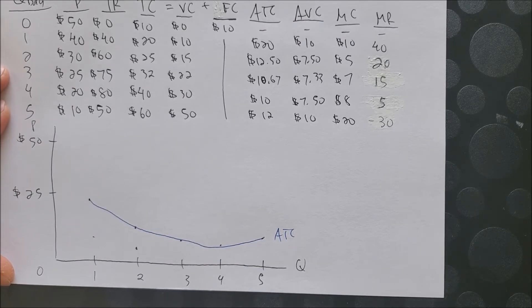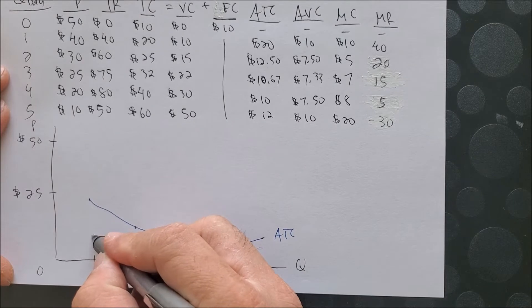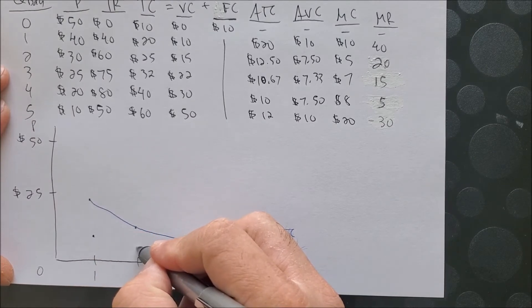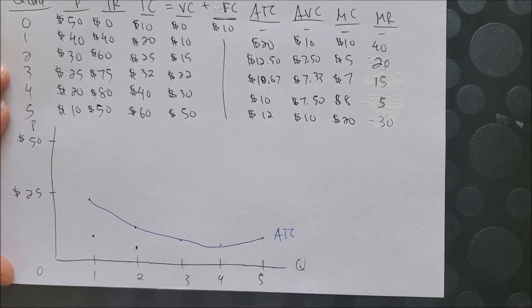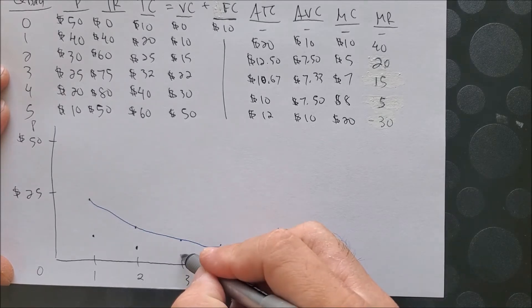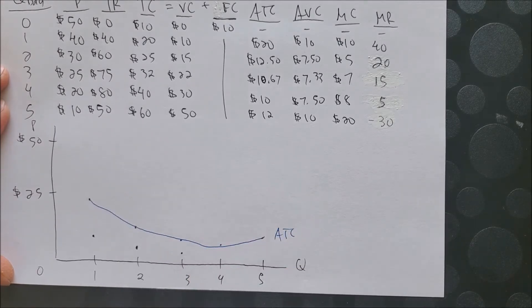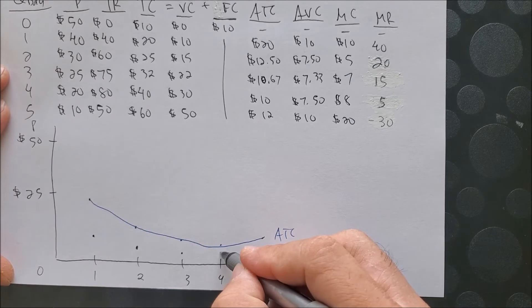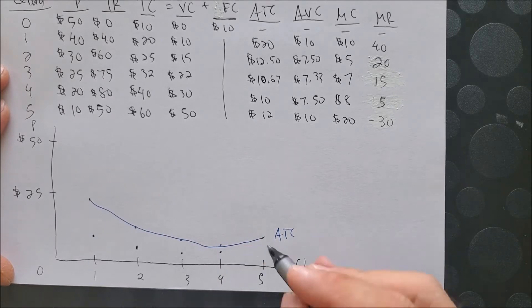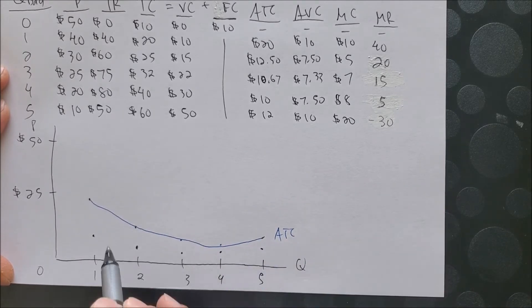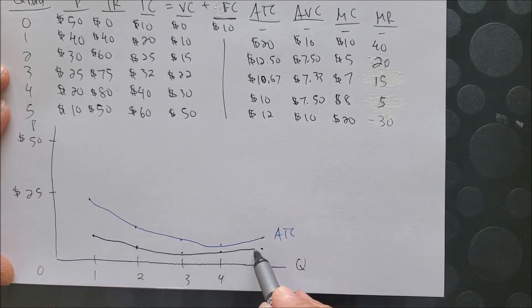Next we are going to graph AVC. We have 1 and 10 somewhere there, 2 and 7.5 somewhere there, 3, 7.33, 4, 7.50, and 5 at $10. So here we have our AVC.